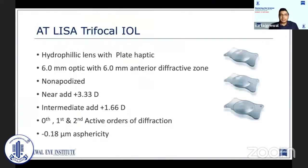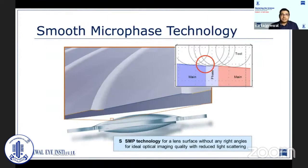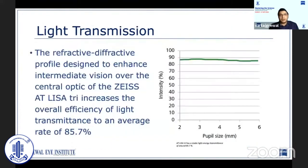The AT-LISA trifocal IOL is a hydrophilic lens with a hydrophobic surface with plate haptics. It has a 6mm optic and a 6mm diffractive zone. It has a near add of 3.33 diopters and an intermediate add of 1.66 diopters. It utilizes the 0th, 1st, and 2nd orders of diffraction, and also has an aspheric surface to help counter the common asphericity. The lens achieves very good light transmittance of 85.7% at all pupil sizes, helping improve contrast sensitivity.